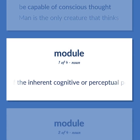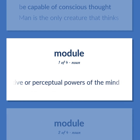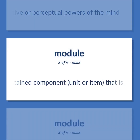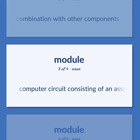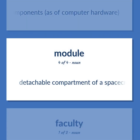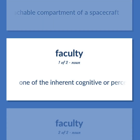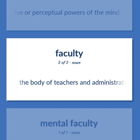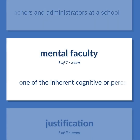One of the inherent cognitive or perceptual powers of the mind. A self-contained component, unit or item that is used in combination with other components. Computer circuit consisting of an assembly of electronic components, as of computer hardware. Detachable compartment of a spacecraft. One of the inherent cognitive or perceptual powers of the mind. The body of teachers and administrators at a school. One of the inherent cognitive or perceptual powers of the mind.